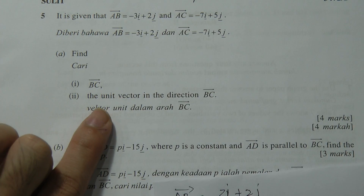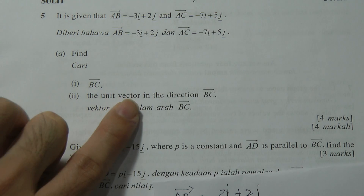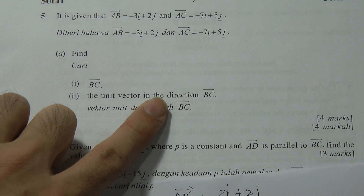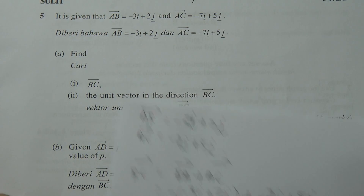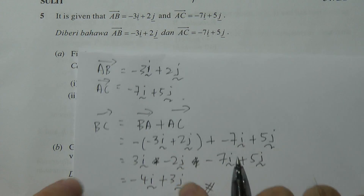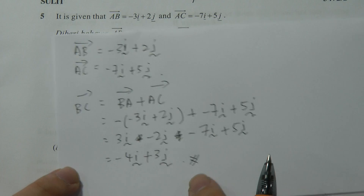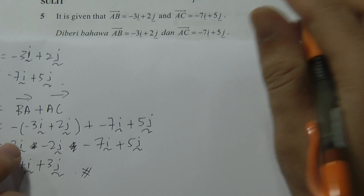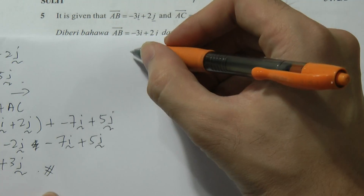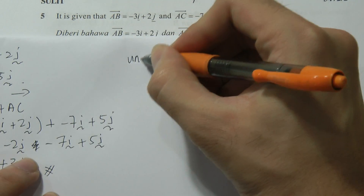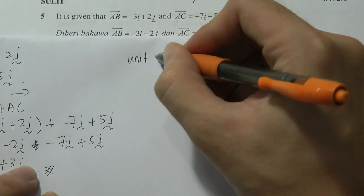So BC equals negative 4i plus 3j. That's all for the first part of Question five.